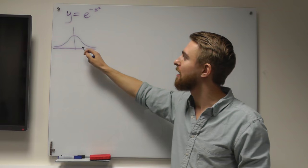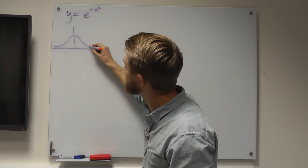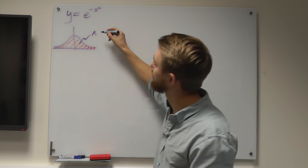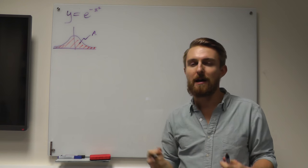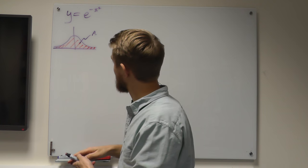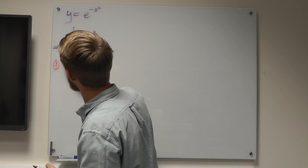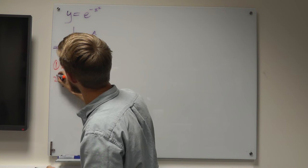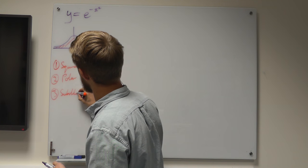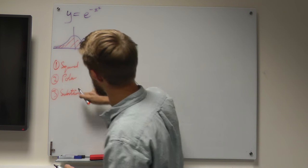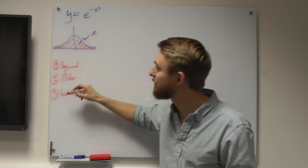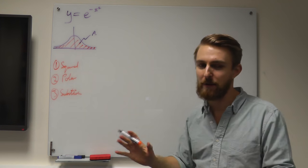We want to find the area underneath this bell curve. If I shade that area in here, we're going to call this area A. You're going to have to use three tricks. We're going to call these three tricks: one, squared; two, polar; and three, substitution. Hopefully it'll become clear, and if you can remember these three words, you'll be able to do the Gaussian integral for yourself without too much trouble.